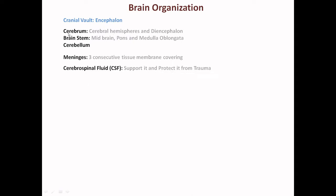The brain has three major portions: the cerebrum, which includes the cerebral hemispheres; the brainstem, which includes the midbrain, pons, and medulla oblongata of the hindbrain; and the cerebellum. It is protected by three layers of connective tissue membrane called the meninges, and shock protection is provided by the cerebrospinal fluid, which protects the brain both inside and outside from trauma.